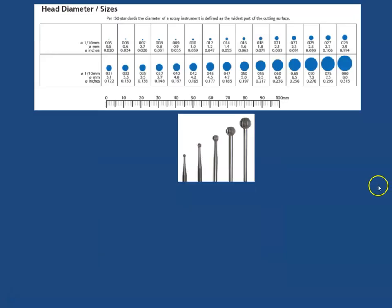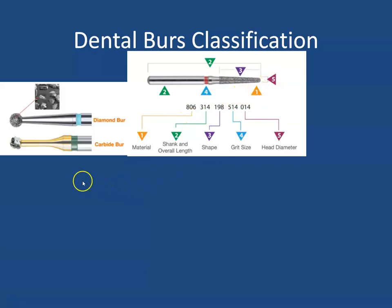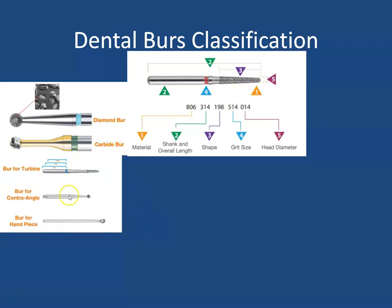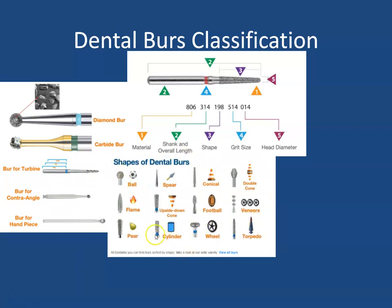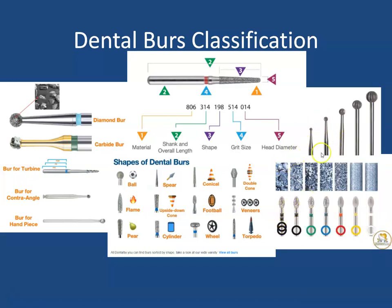To review, when classifying dental burrs: first look at the material — diamond or carbide; then the shank and overall length to determine which handpiece it fits; then the shape, as there are many different shapes to learn; then the grid size, ranging from super fine to double super coarse; and finally the head diameter, where you move the decimal point two places, so 014 equals 1.4 millimeters.